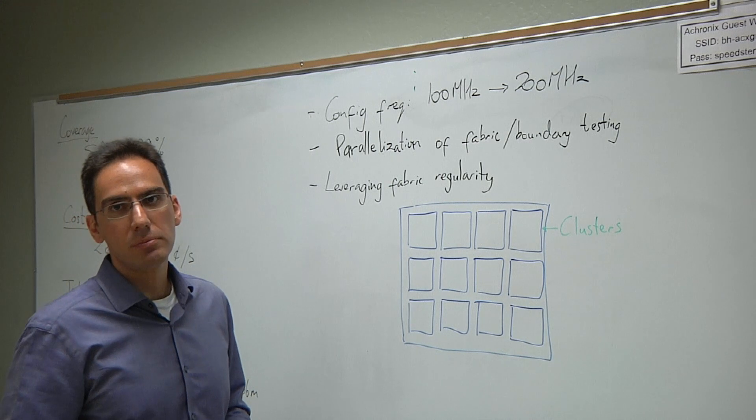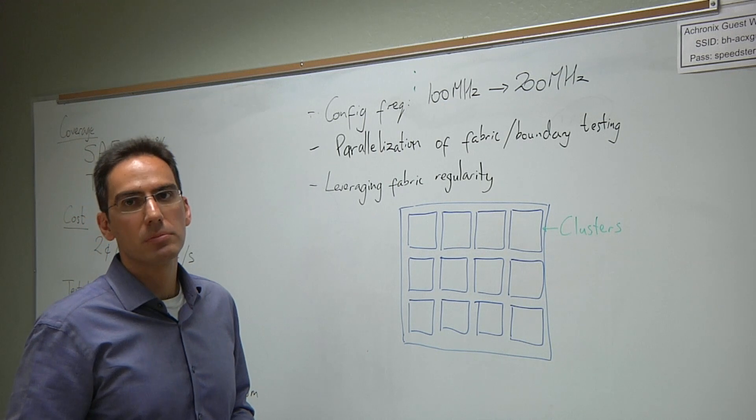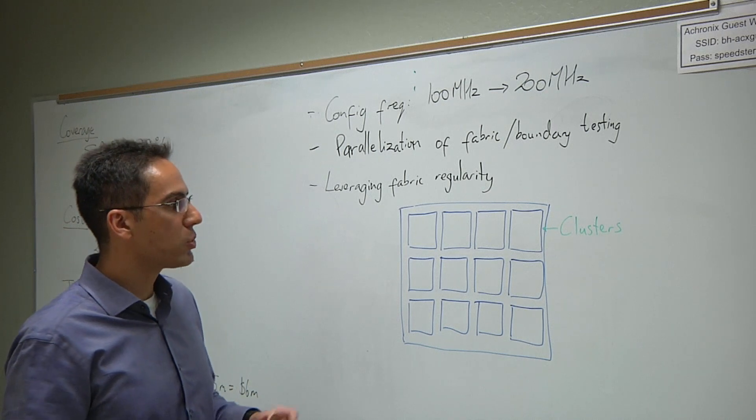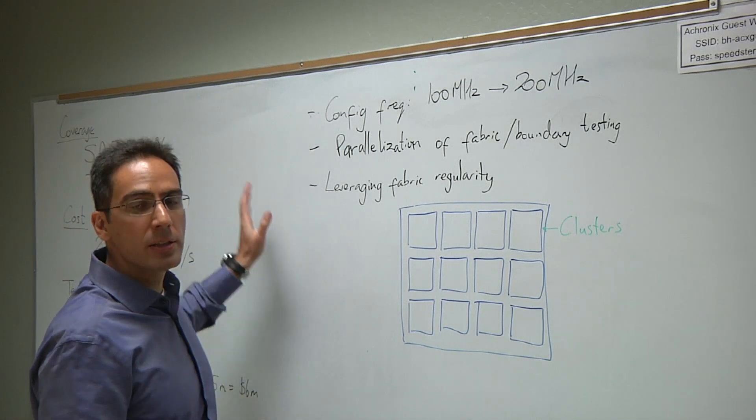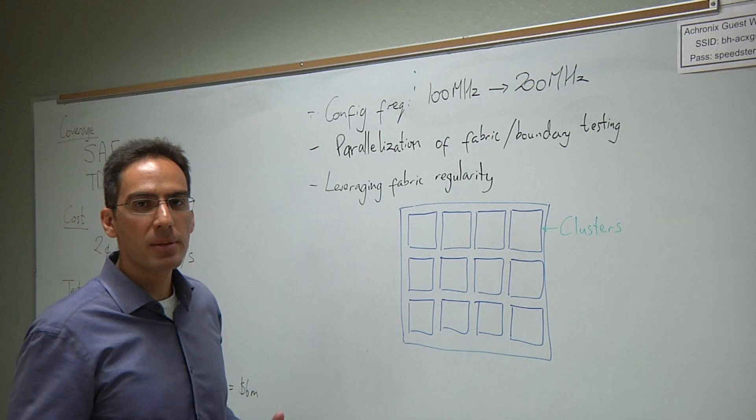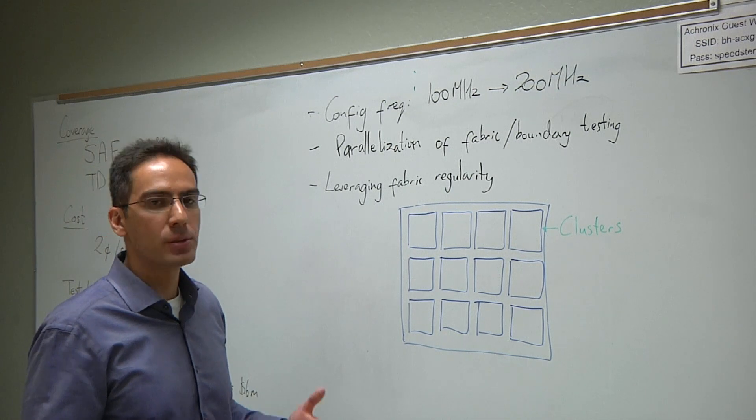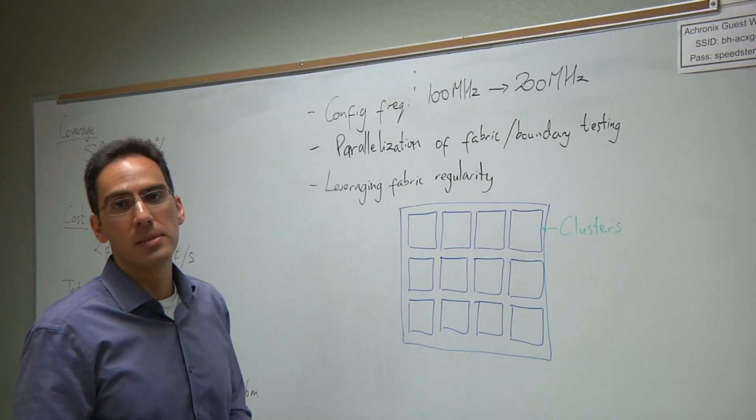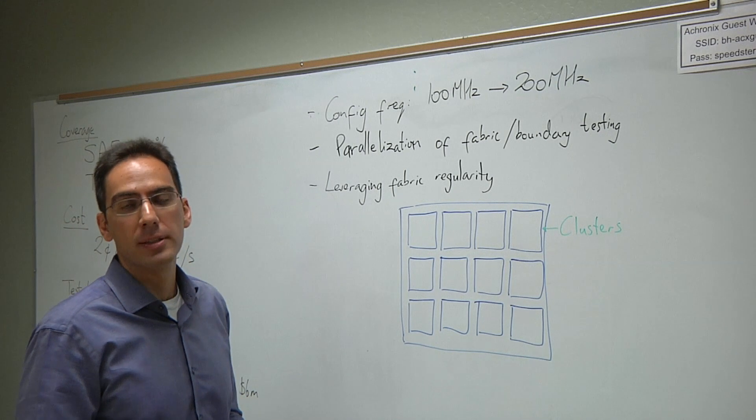And so the coverage doesn't really change, because these are very regular structures. It's basically that you're doing more things at once. Exactly. The coverage will be what we've targeted here earlier. But as far as test time goes, we'd be looking at at least an order of magnitude improvement. And what that will translate into is an order of magnitude reduction in the test cost.